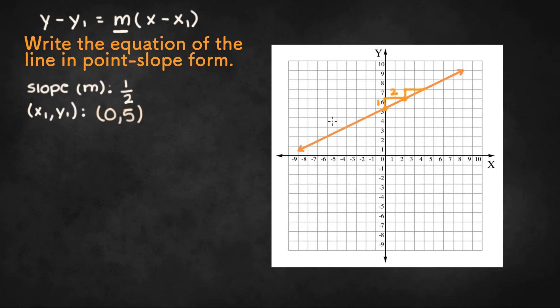Or we could use any of these points that are on the line. We can choose something like (-4, 3) as another point.